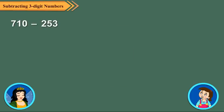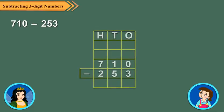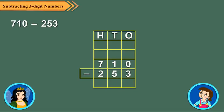Now Neha, try to subtract 253 from 710. Okay, I will try. We arrange the numbers in columns. Now, we subtract the ones digits. Since 0 is less than 3, so we regroup 1 ten, 0 ones as 0 tens and 10 ones. 10 ones minus 3 ones equal to 7 ones.